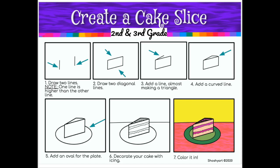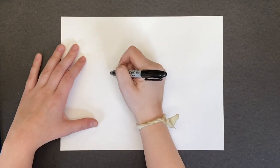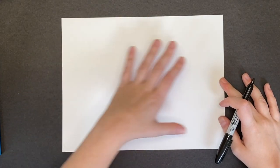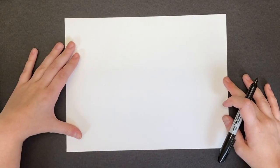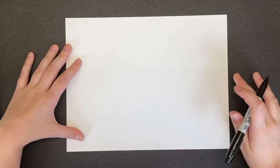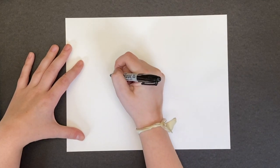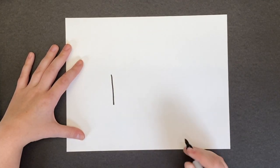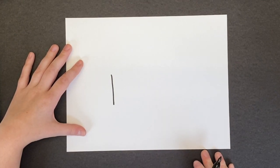The first thing I'm going to do is make sure my paper is horizontal, which means it's long ways from left to right. And then I'm going to start by making a short line in the middle-ish of my paper.